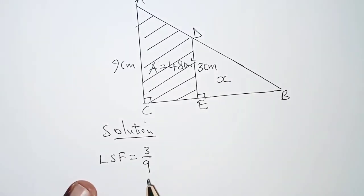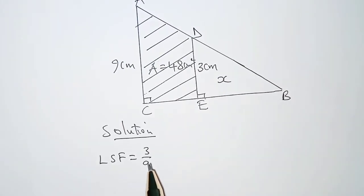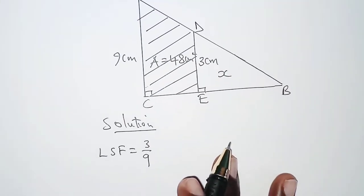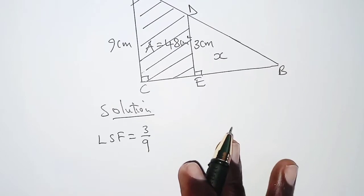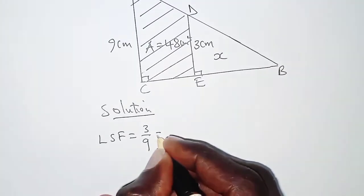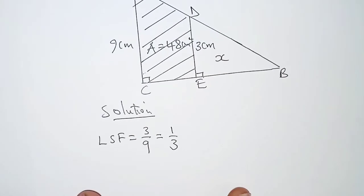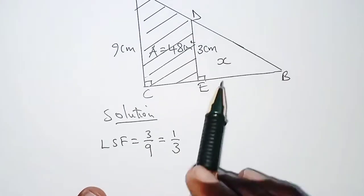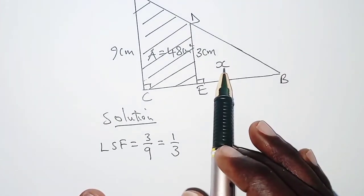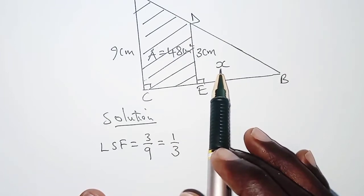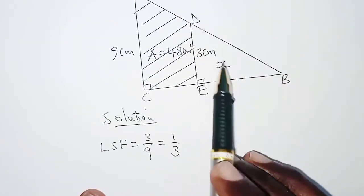If you like, you can also have 9 over 3, but just ensure that you maintain that ratio throughout your workings. So the linear scale factor simplifies to 1 over 3. Remember our aim is to get the value of x, and x in this case is the area of the unshaded part triangular shape.